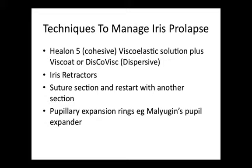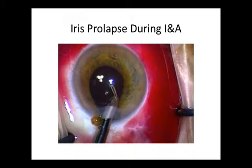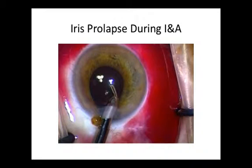Other less commonly used techniques include the use of pupillary expanders, of which there are various types. In this case, iris prolapse has occurred during INA of the cortex. Sometimes if this occurs at the end of this stage, one can deliberately change one's grip and push sideways to prevent further iris prolapse from the section — that is, to create a physical block in the section with the INA probe.